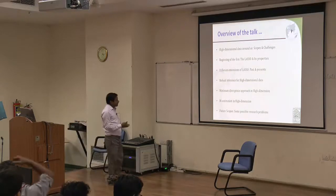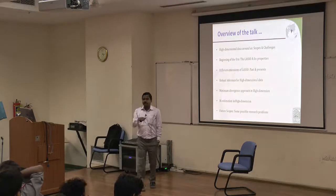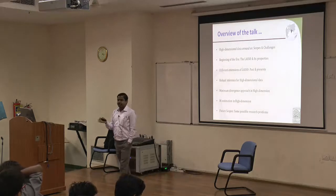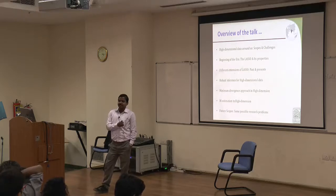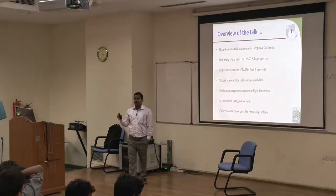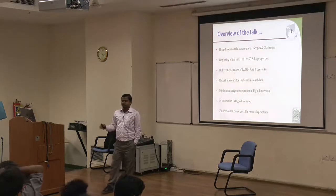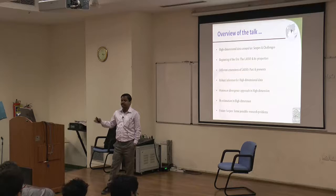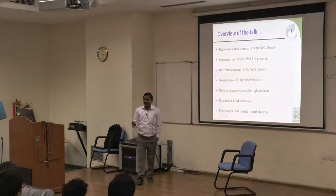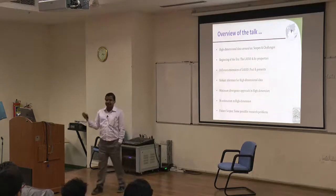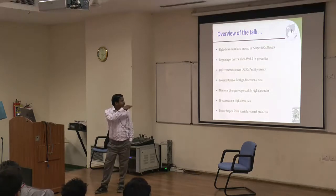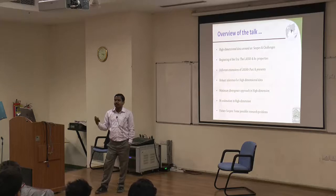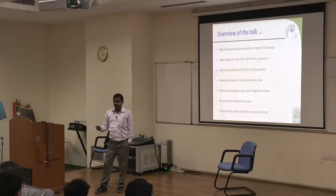How can we get stable inference in a high-dimensional setting? There are many ways. One approach I work on is the minimum distance approach, and I will discuss that and its high-dimensional extension. The second approach is the M-estimation approach. I'll briefly mention both, with a bit more focus on minimum divergence where I have some works. Then I will end with future scopes and possible research collaborations. For each method discussed, there are two challenges: mathematical/statistical and computational.